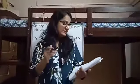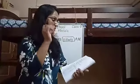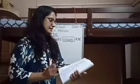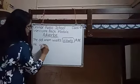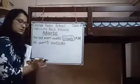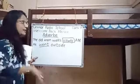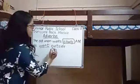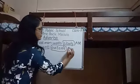Adverb of place — it tells us where an action is done. You can remember: place means where. For example: He went outside. 'Went' is the verb. Where did he go? Outside. So 'outside' becomes the adverb of place.